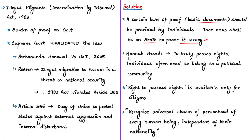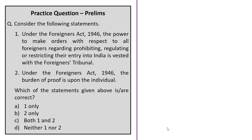The author has quoted political philosopher Hannah Arendt, who said that to truly possess rights, individuals often need to belong to a political community — meaning the right to possess rights is available only when individuals are citizens. The author argues we must recognize a universal status of personhood for every human being, independent of their nationality. This is why the editorial is titled 'For a Universal Status of Personhood.' To summarize: those declared as foreigners shall be given an equal opportunity and fair chance to prove their citizenship, significantly reducing the number of people who might otherwise face detention camps or become stateless.